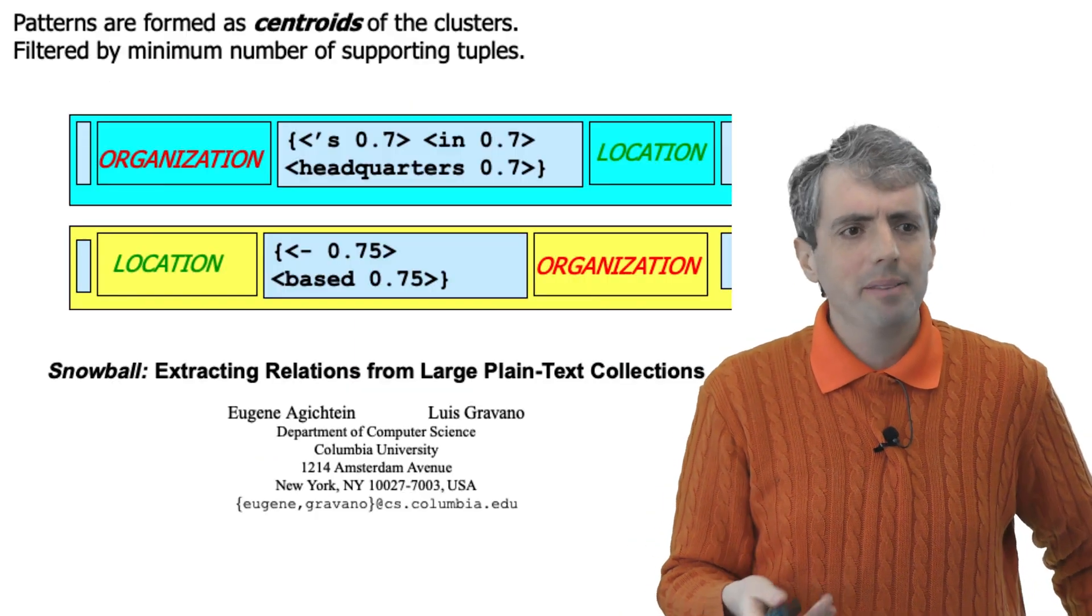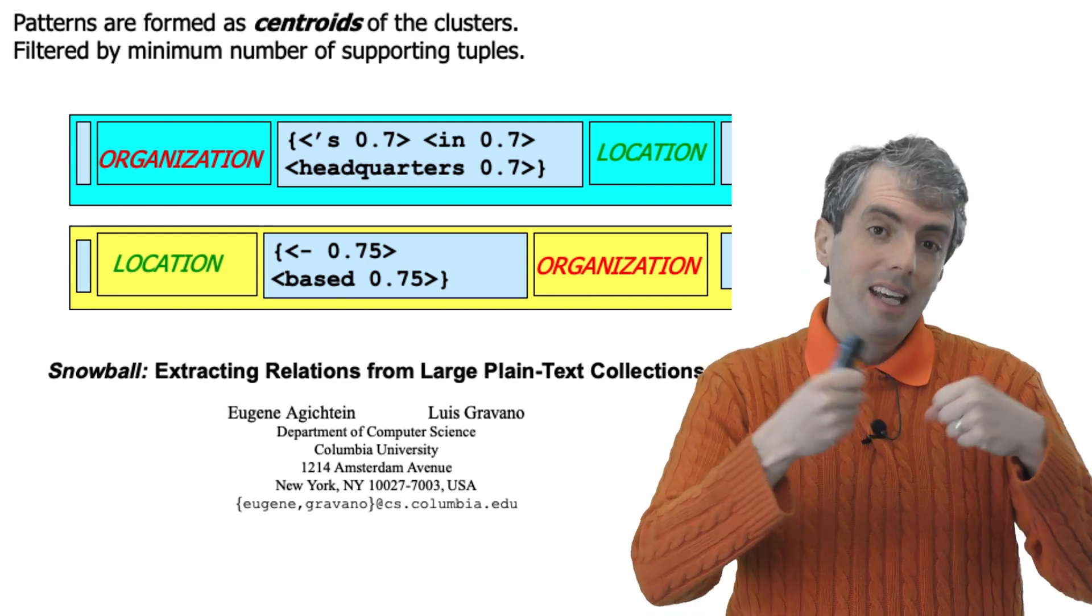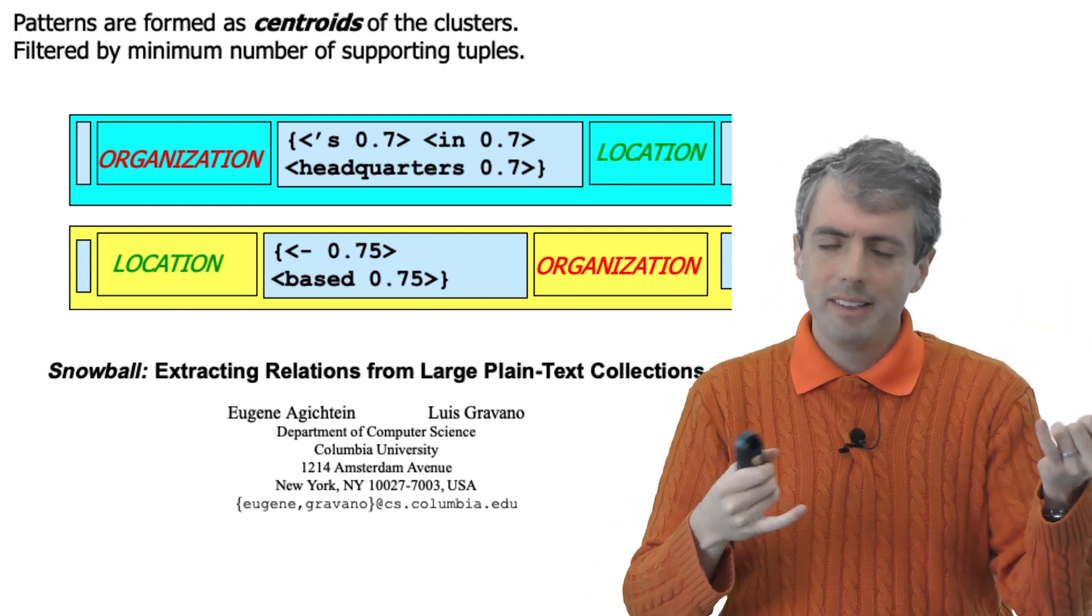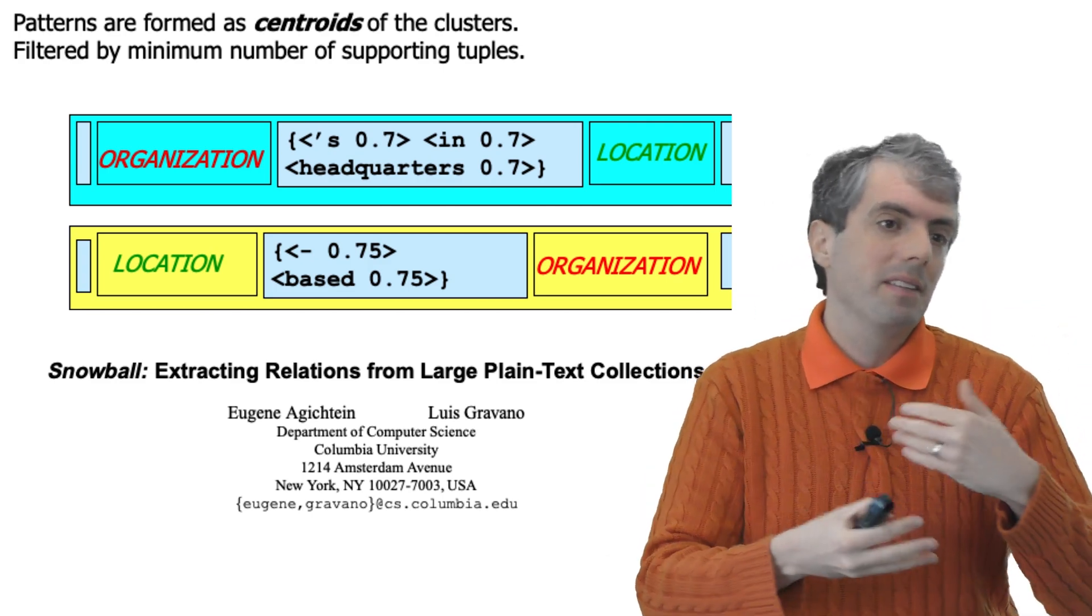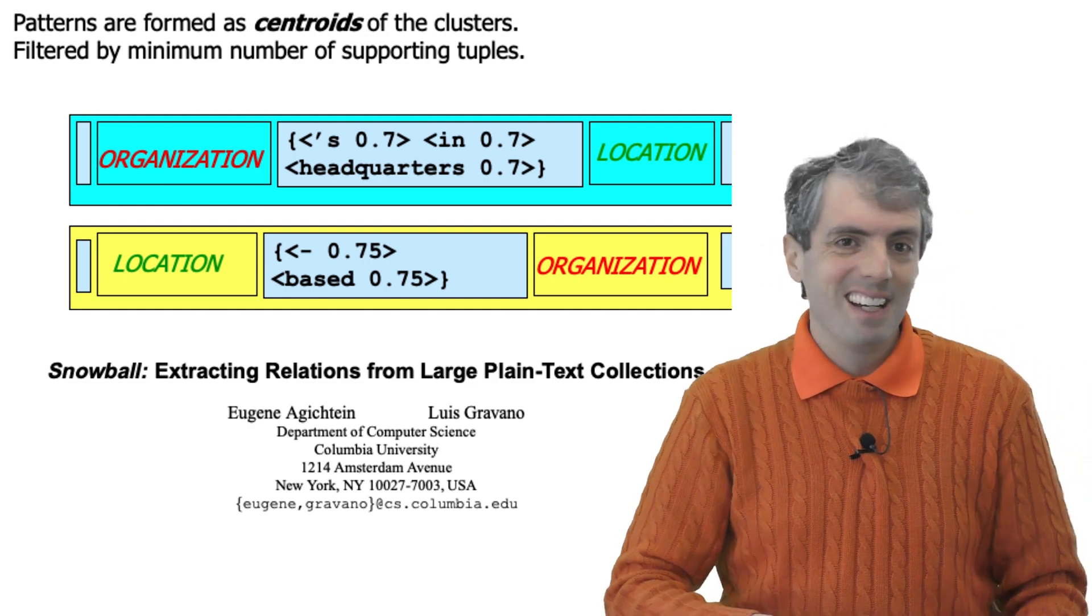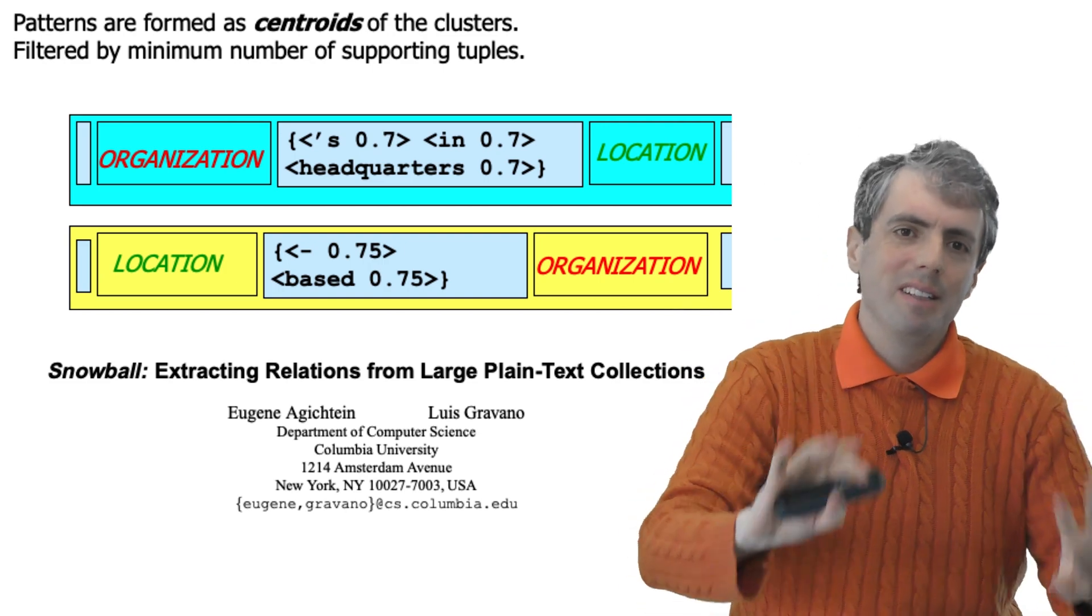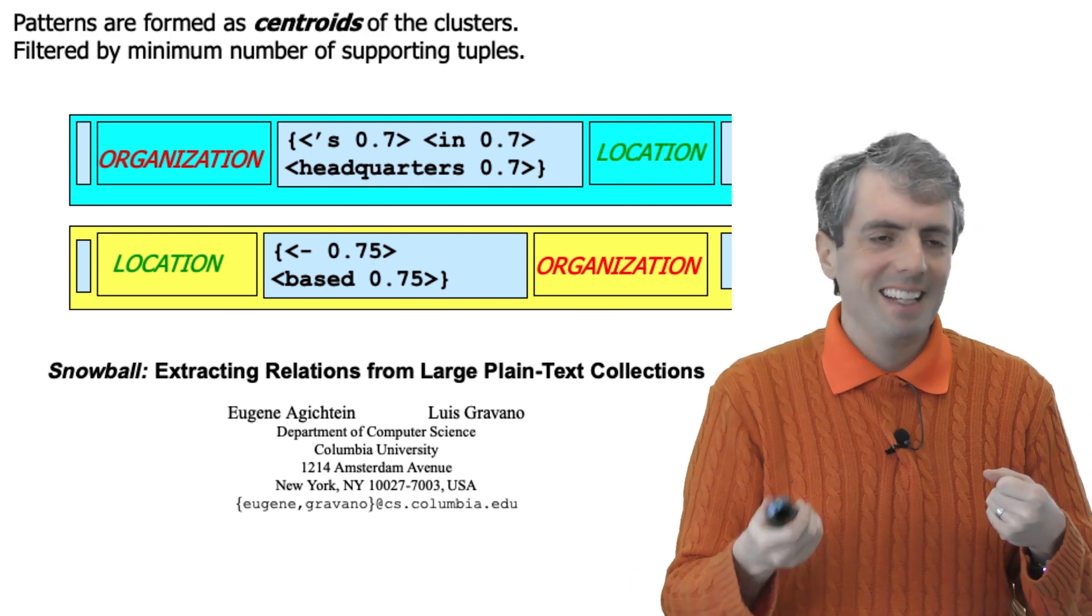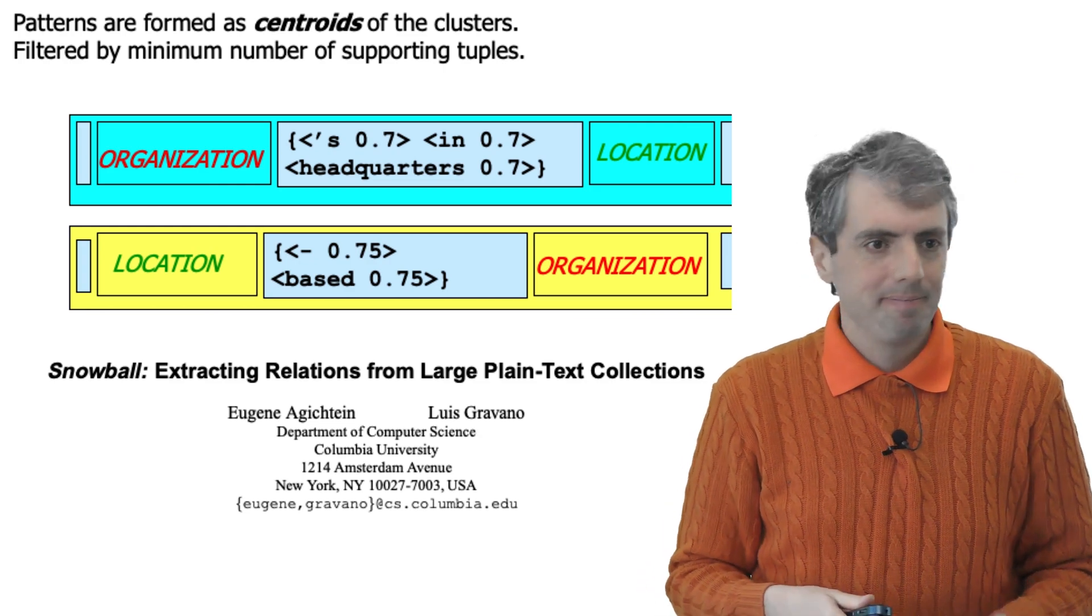The snowball system is a way of improving this. And here what they do, instead of just taking this at face value, they look at all the places where you have an organization and a location together, and then they cluster all of the different ways that those two things appear together to get a more probabilistic sense of, hmm, if I see X based Y given an organization and a location, what is the probability that this is actually saying that Boeing is based in Seattle?